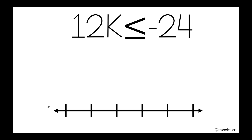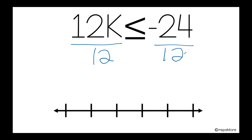How about you try to do this one? Analyze what the situation is — what can you do to isolate your variable? As you can see, 12 is multiplying k. So the inverse operation of multiplication is division. So I'm going to divide by 12 here, and I'm also going to divide by 12 on the other side of the inequality. Now I'm ready to cancel this out, and I have k is less than or equal. Remember that when you're dividing or multiplying and they have different signs, your answer will be negative.